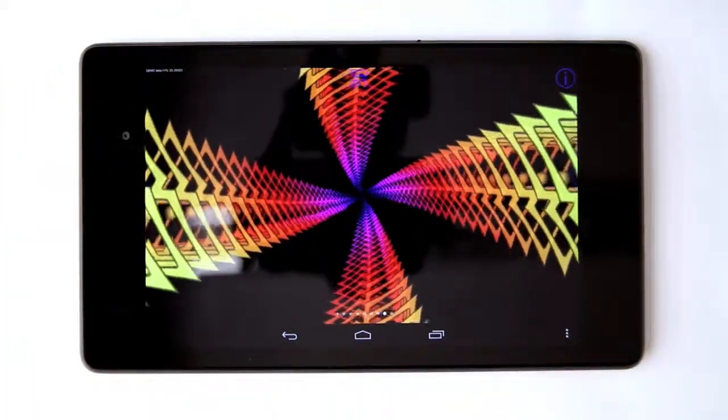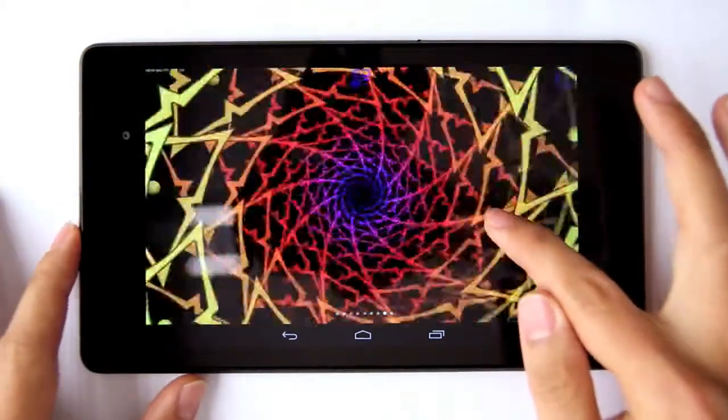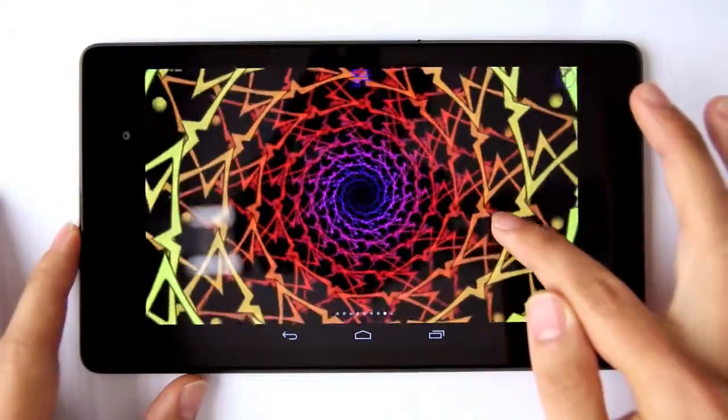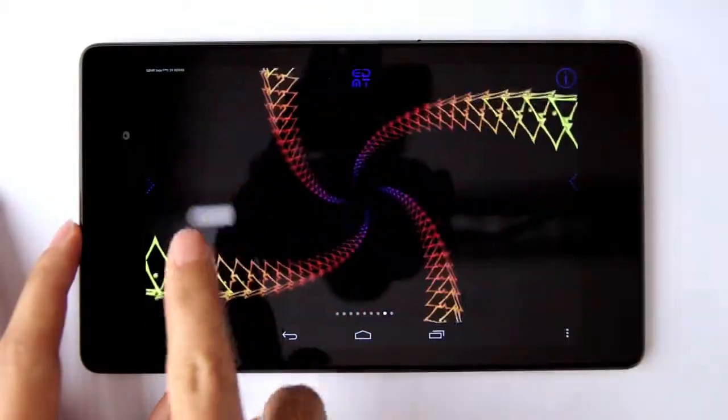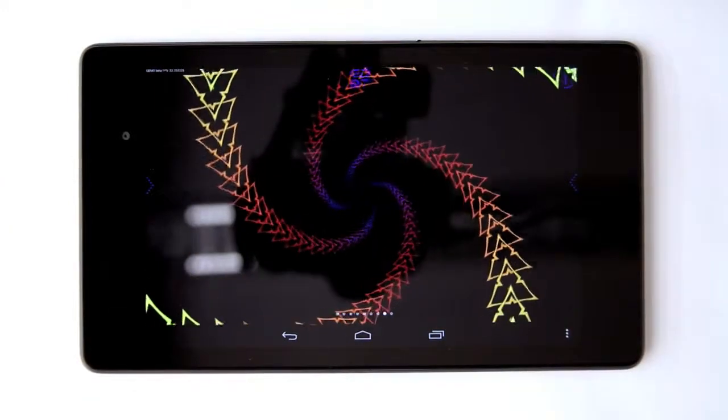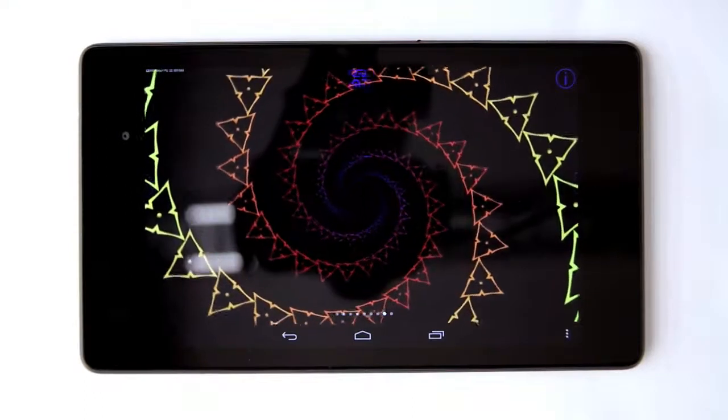This is one of those scenes where you can just let it run and watch it evolve. There you go. This is Whitney's spiral in EDMT.